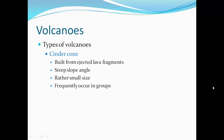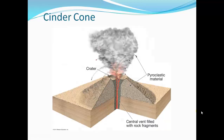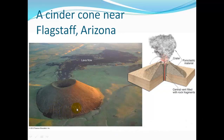Another type is the cinder cone. They're built from ejected lava fragments, have a very steep slope angle, are fairly small in size, and tend to occur in groups. The central vent comes up from the magma chamber and ejects chunks of pyroclastic material that build up the volcano. Here's a picture of a cinder cone near Flagstaff, Arizona.